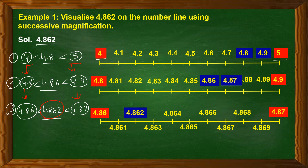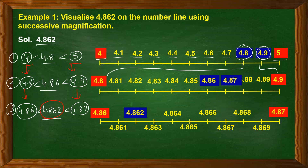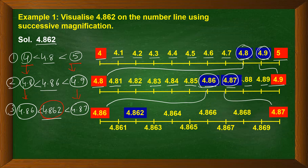Now let us draw the number line. First, the endpoints are 4 and 5; in between we have 4.1, 4.2, 4.3, 4.4, 4.5, 4.6, 4.7, 4.8, 4.9 — and we mark 4.8. Next, the endpoints are 4.8 and 4.9; in between we have 4.81 through 4.89 — and we mark 4.86. Then the endpoints are 4.86 and 4.87; in between we have 4.861, 4.862, 4.863, 4.864, 4.865 and so on — and we mark 4.862.